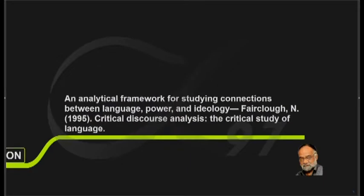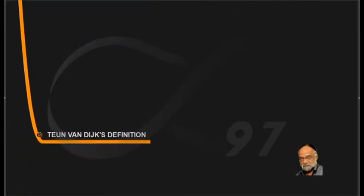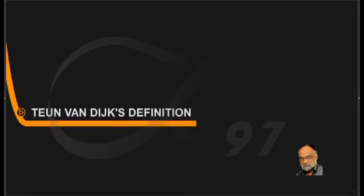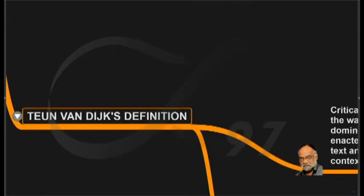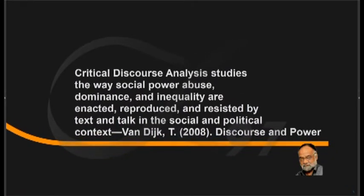He has a three-dimensional model, but first I would like to go to a person called Toyn Van Dyke. According to Van Dyke, critical discourse analysis studies the way social power abuse, dominance, and inequality are enacted, reproduced, and resisted by text and talk in the social and political context. I know that was rather heavy, so let me explain. Fairclough speaks about power and Van Dyke also speaks about power.